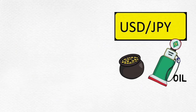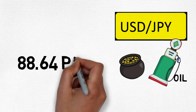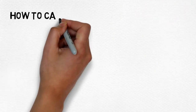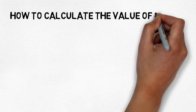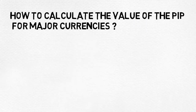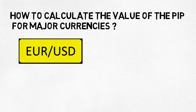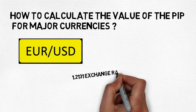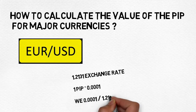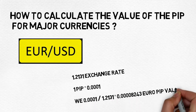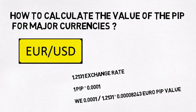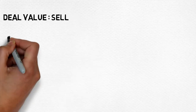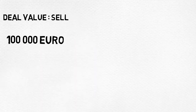In major pairs quoted as Euro against the US dollar, we calculate the value of a PIP as follows. The Euro against the US dollar has an exchange rate of 1.2131 to 1.2132. If 1 PIP equals 0.0001, we divide that number by 1.2131 and we get 0.00008243 Euro. Let's turn this into a forex deal to see what it would be in a real-life forex deal that results in a profit or a loss.